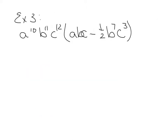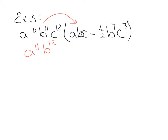Example 3: multiply a10b11c12, which is a monomial, times abc minus 1.5b7c3. This second part is a binomial. So whenever you have a monomial times a binomial, you use distributive property. We're going to distribute this times this. We multiply the matching variables together: a10 times a1 makes a11, b11 times b1 makes b12, and c12 times c1 makes c13.